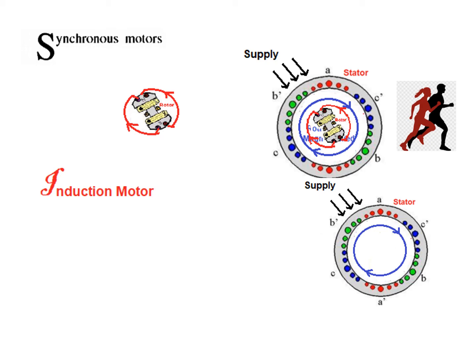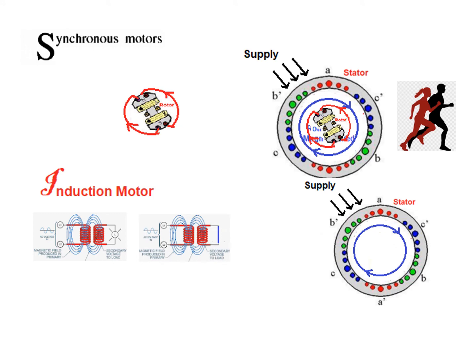To understand the rotor, let's recall the transformer principle. When an input signal is applied to the primary winding, a voltage is induced in the secondary winding, and a connected load starts glowing because of this induced voltage. Now, what will happen if we short-circuit the secondary terminal? The induced voltage will cause current to keep circulating within it.